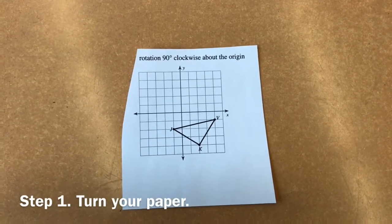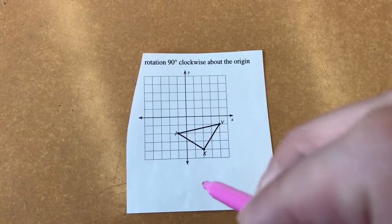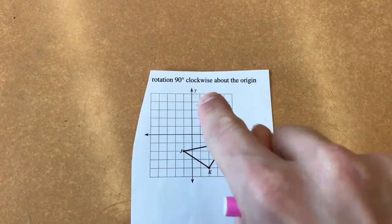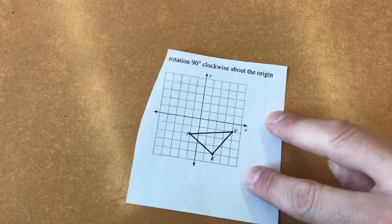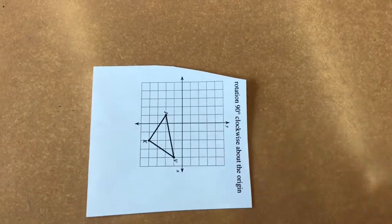Step number one is to turn your paper in the appropriate direction. So in this case, since it's clockwise, we go this way like a clock. Otherwise, we go counterclockwise. What I'm being asked to do is rotate 90 degrees clockwise, which means I turn my paper one turn clockwise.